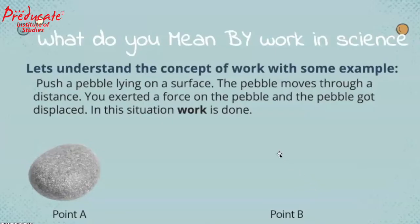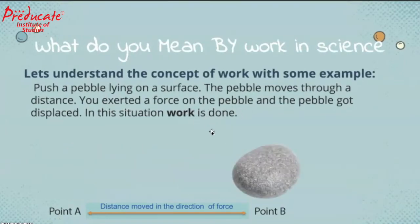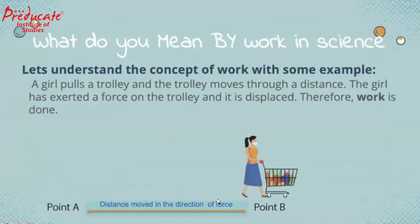Let's understand the concept of work with some examples. Push a pebble lying on a surface. The pebble moves through a distance. You exerted a force on the pebble, and the pebble got displaced from point A to point B. In this situation, work is done. Another example: a girl pulls a trolley, and the trolley moves through a distance. The girl has exerted a force on the trolley and it is also displaced from point A to point B. Therefore, work is done. The important concept to remember is that distance is to be covered in the direction of force.